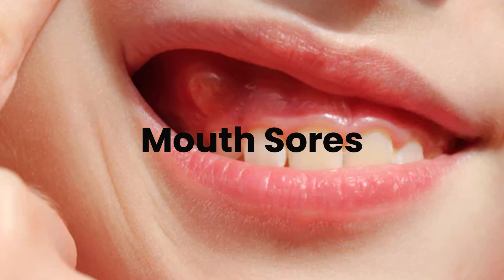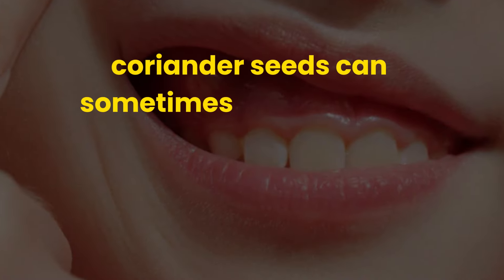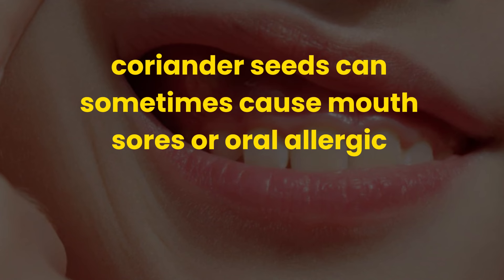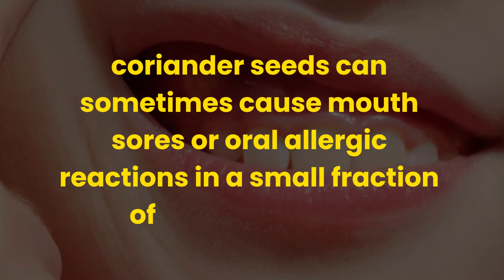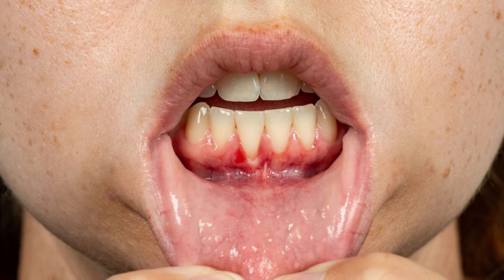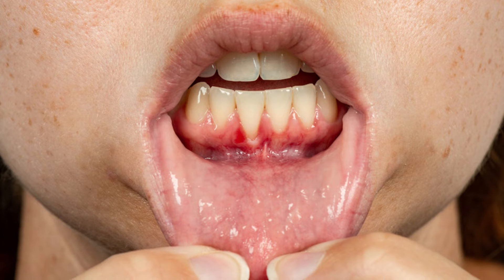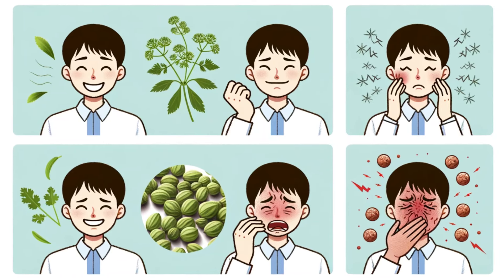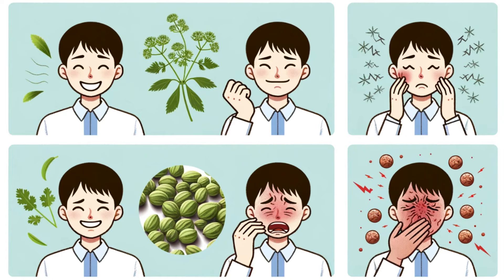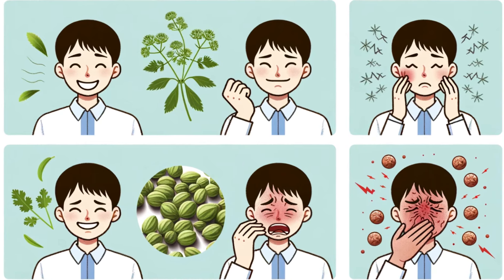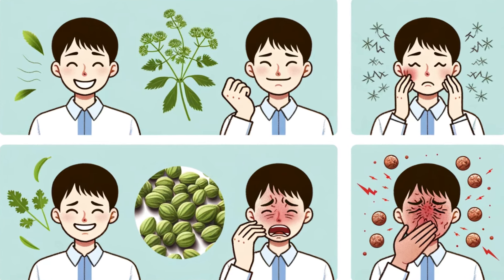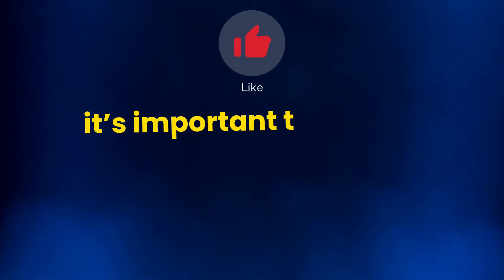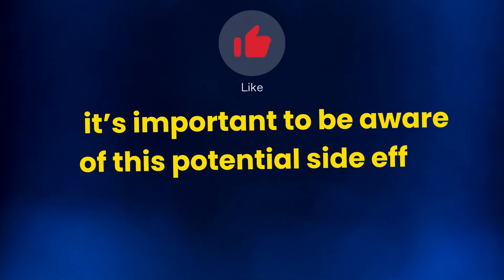Mouth sores. Coriander seeds can sometimes cause mouth sores or oral allergic reactions in a small fraction of the population. This is due to an allergic reaction to the proteins found in the seeds. Those with a sensitivity or allergy to coriander might experience itching, swelling, or sores in the mouth upon consumption. Although rare, it's important to be aware of this potential side effect, especially if you have a history of food allergies.